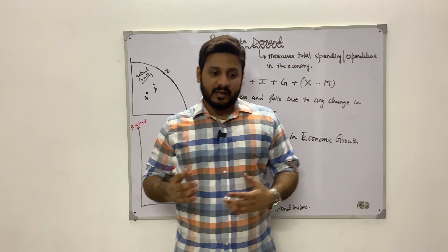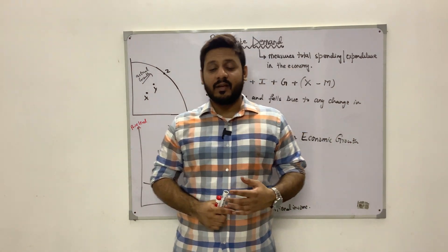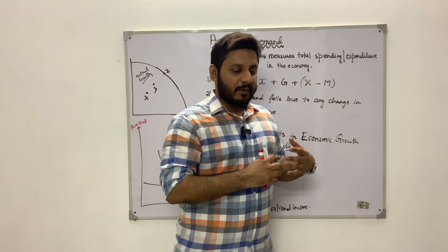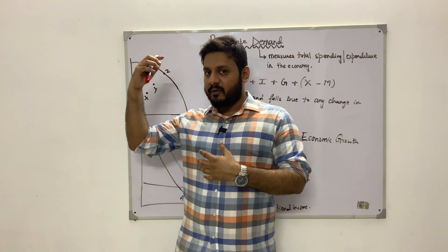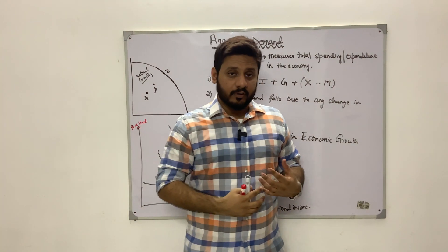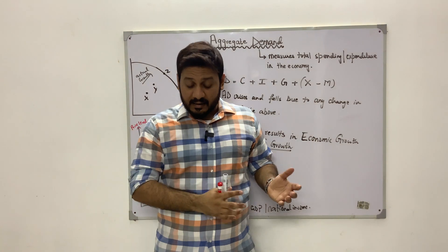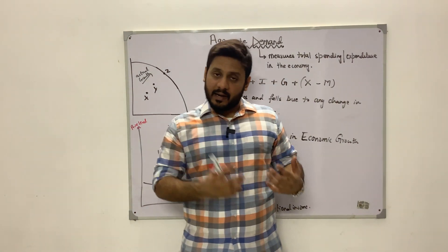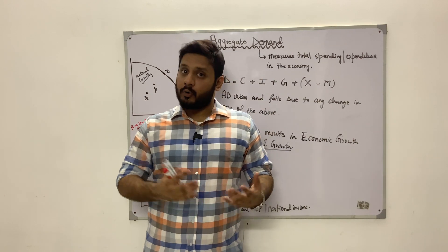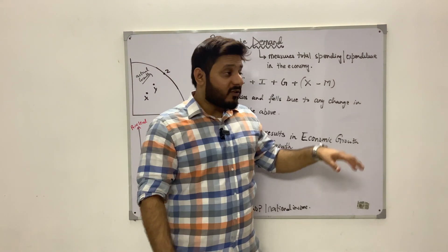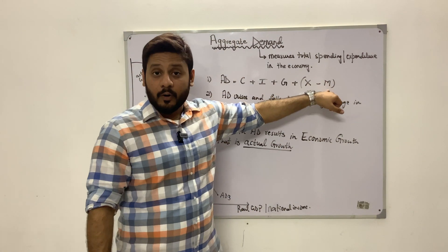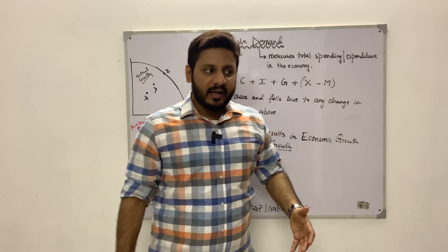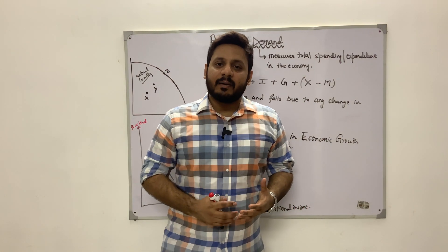Then you have spending in the form of net exports — the expenditures done by foreign residents on our domestic goods in the form of exports, minus the expenditures done on imported goods by our domestic consumers or firms. We deduct these imports from our exports to arrive at net exports. So aggregate demand measures the spending or expenditures taking place in the economy.